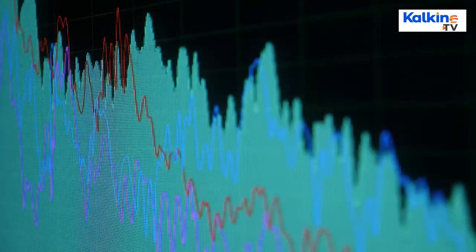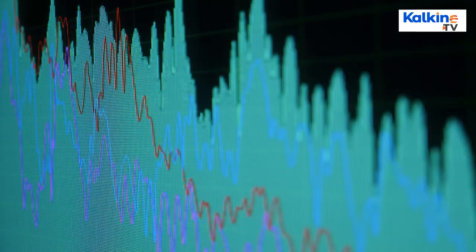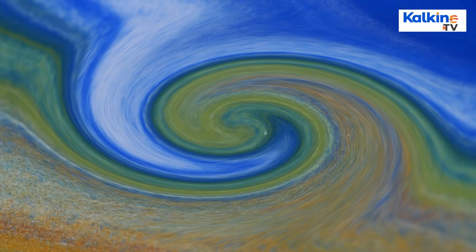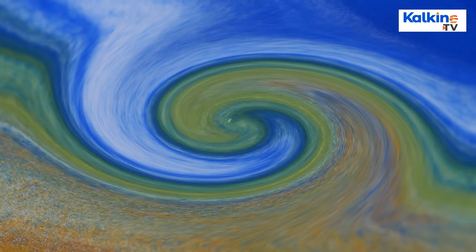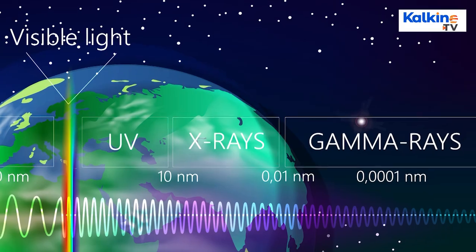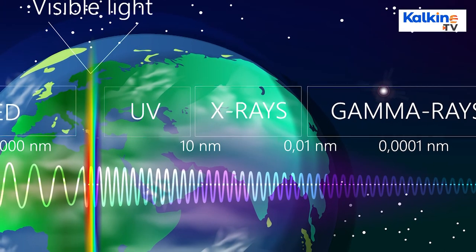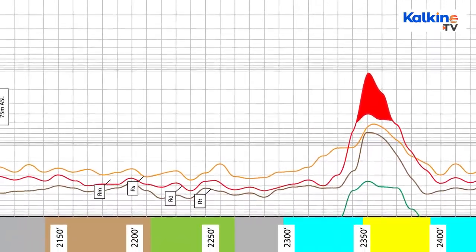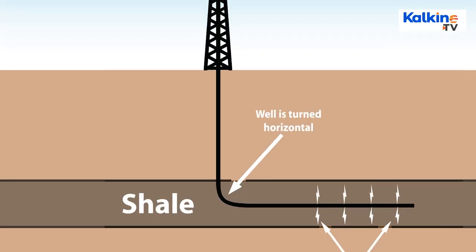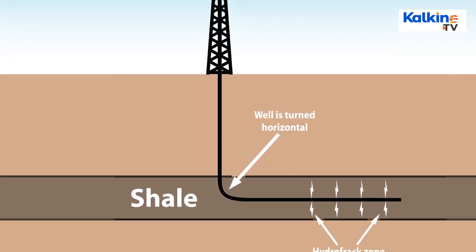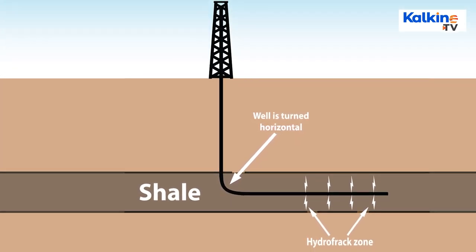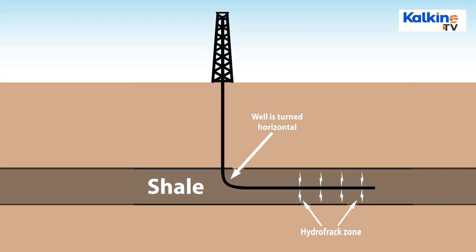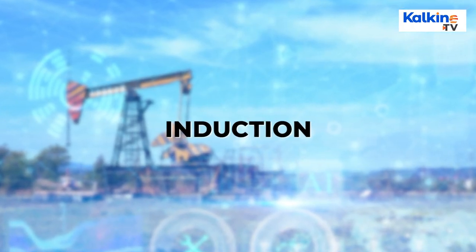Acoustic logs are also used to determine the saturation level of pore spaces present in rock formations. In this technique, a sound wave is transmitted into the formation and recorded back at the receiver. The ease of sound wave travel in fluid-bearing formations tells us about the formation's saturation content. Gamma ray logs are used to determine the shale content present in the formation; clay present in the formation emits gamma rays which are measured by the tool, indicating the type of formation and discriminating between shale and non-shale formations.